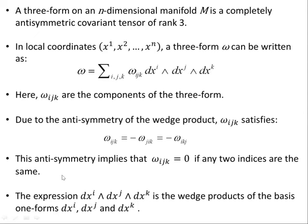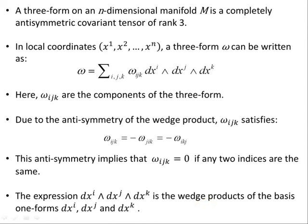As we've seen in the two-form video and the wedge product video, wherever two indices are the same, the wedge product must be zero. So the expression dxi wedge dxj wedge dxk is the wedge product of the basis one-forms dxi, dxj, dxk. They can be used as bases, but we'll get into that another time.